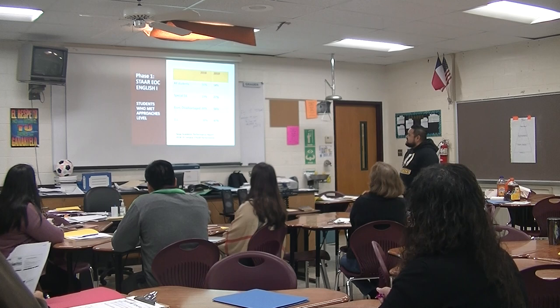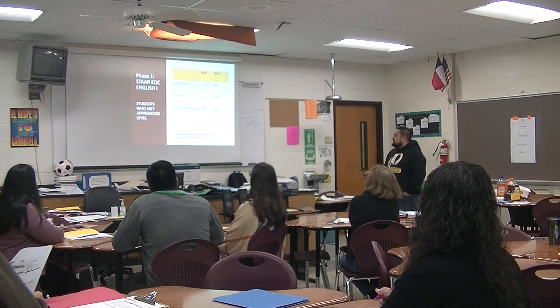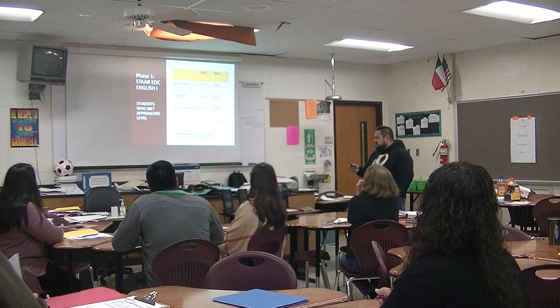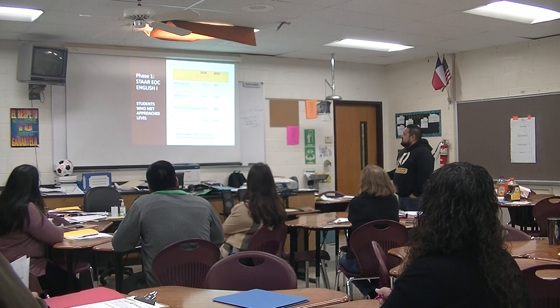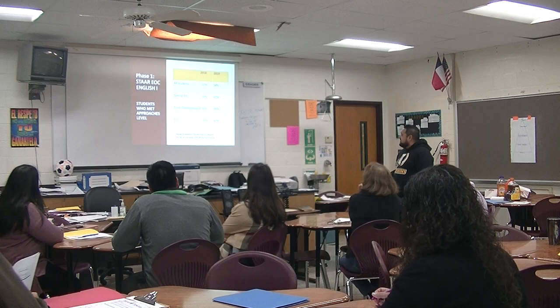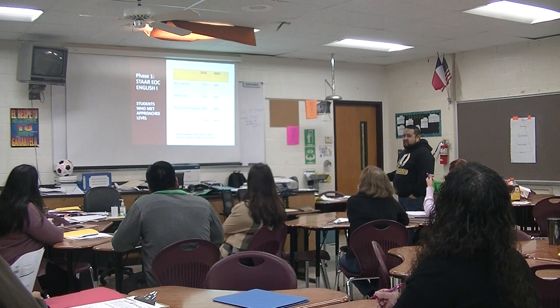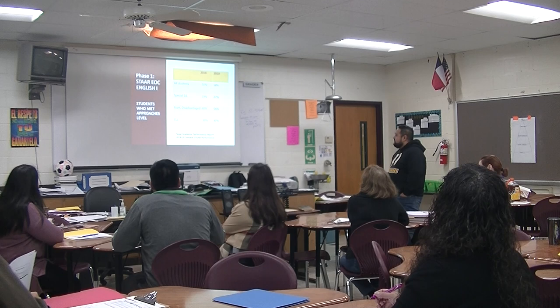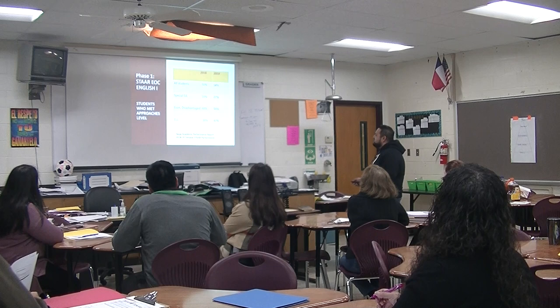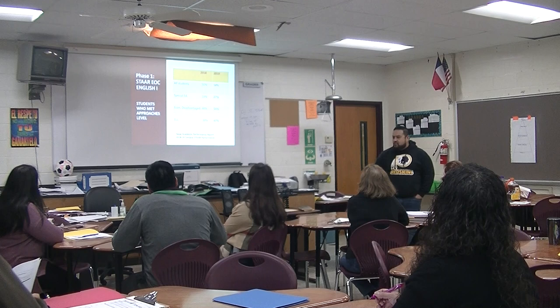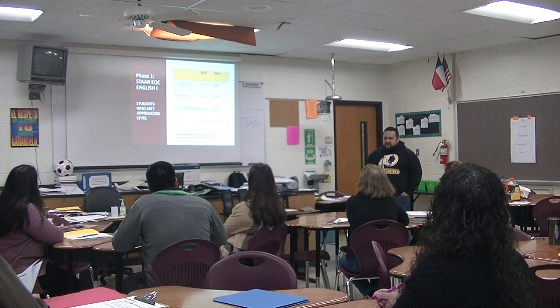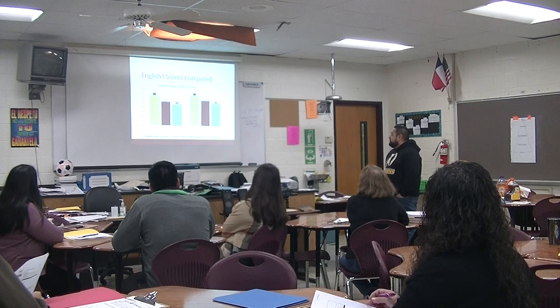Here are our scores from the past two years, 2018 and 2019, for STAAR EOC English 1 — specifically students who met the approaches level. Out of all students, we went from 50 percent in 2018 to 58 percent in 2019 — a good increase. Our diverse learners went from 19 to 27 percent, economically disadvantaged from 48 to 56 percent, and EL students jumped from 38 to 47 percent. Overall, our English 1 students did great, so our differentiating strategies are working.